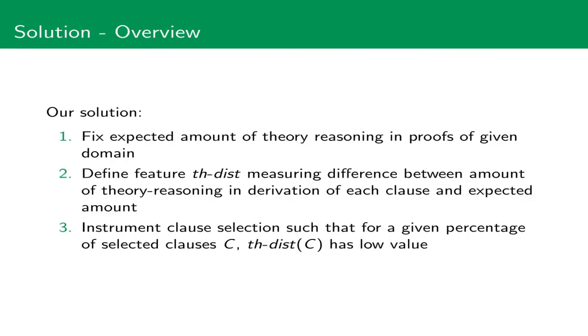The solution we present in our work consists of three parts. First, we fix the expected amount of theory reasoning in proofs of a given domain. Secondly, we define a feature, the so-called theory distance, which measures the difference between the amount of theory reasoning in the derivation of each clause and the expected amount of theory reasoning. And third, we use this theory distance feature to instrument clause selection such that for a given percentage of selected clauses the theory distance is small and has a low value.